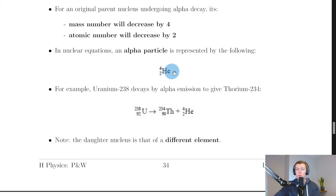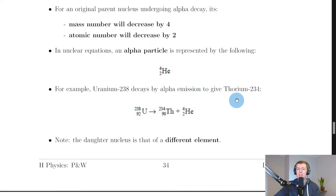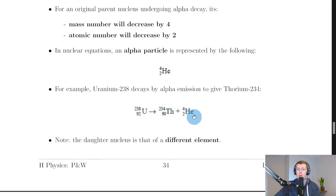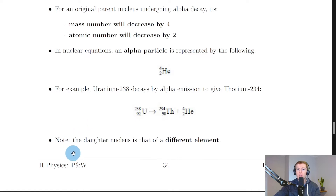For example, if our parent nucleus is uranium-238 and it decays by alpha emission, it gives thorium-234. We have uranium-238 here, an arrow to show what is produced, then thorium-234 plus the alpha particle helium-4-2. Because we can see an alpha particle in this reaction, that confirms this is an alpha decay.